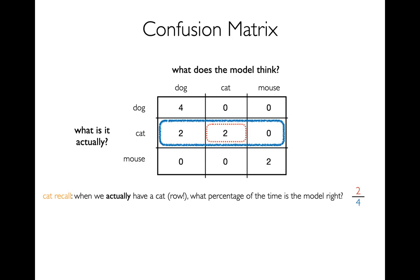When I ask about cat recall, I want to know: when we actually have a cat, what percentage of the time is the model right? Since I'm asking about what is actually the case, I'm dividing by the sum of numbers in a row, because each row represents what the data actually is. The denominator is the sum of the row, and the numerator is just how many times we correctly called a cat a cat. In this case we get two over four.